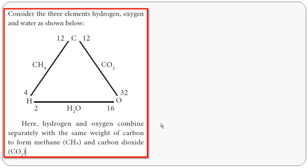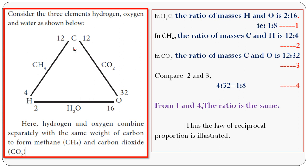Now let us consider one example with three elements: carbon, hydrogen, and oxygen. First, hydrogen combines with oxygen to form water. Second, carbon combines with hydrogen to form methane, CH4. Third, carbon combines with oxygen to form carbon monoxide. In water, the formula is H2O. Here, hydrogen and oxygen combine separately with the same weight of carbon to form CH4 and carbon dioxide. You have to compare water with methane and carbon dioxide.